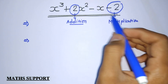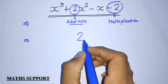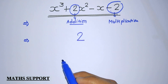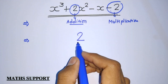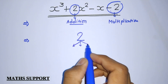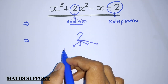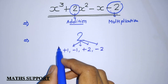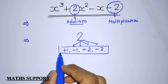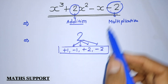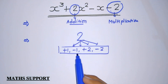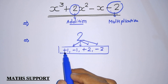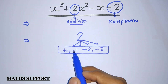Before factorizing, first we write the constant term — here the constant term is 2. Now write down the factors of 2 in plus and minus form: factors of 2 are 1 and 2, so we write plus 1, minus 1, plus 2, and minus 2. We need to select three values from these because our equation is a cubic polynomial and will have three zeros.